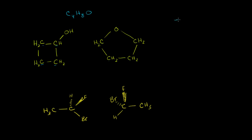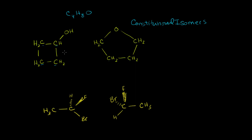So these are going to be isomers — a special type of isomers. In this situation, we don't have the same bonds. We're made up of the same things, but the bonds — what is connected to what — is different. So we call this a constitutional isomer. We are made up of the same things, but we are actually two very different molecules.